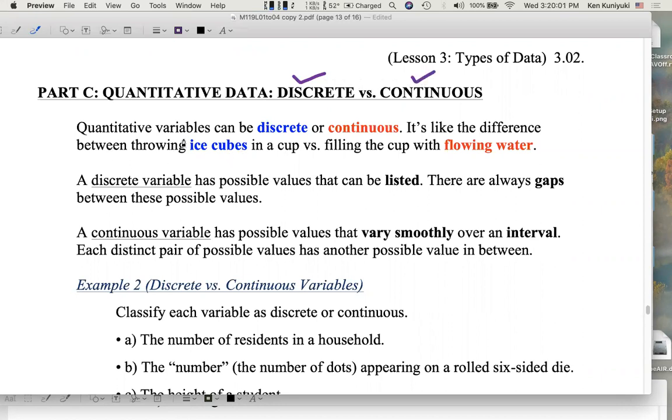Quantitative variables can be discrete or continuous, and it's basically the difference between throwing ice cubes in a cup, plunk plunk plunk, that's like discrete variables. Flowing water is more like continuous variables. A discrete variable has possible values that can be listed, and there are always gaps between these possible values. A counting variable is a classic example of a discrete variable.